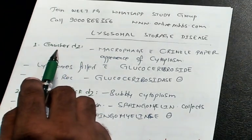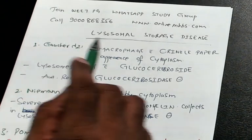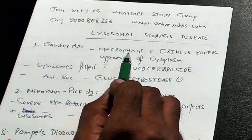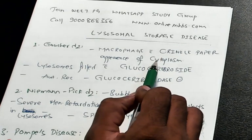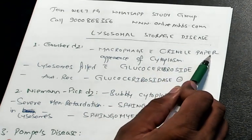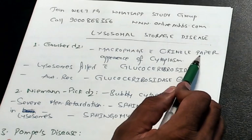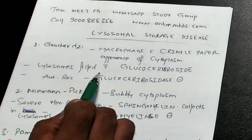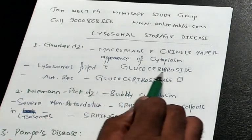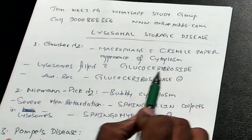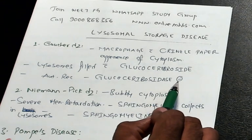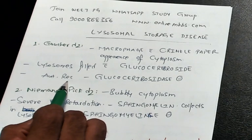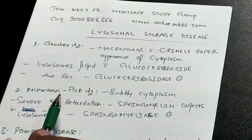Gaucher's disease — what are the 3 points you want to remember? In Gaucher's, the macrophage has got a cytoplasm with a crinkled paper appearance, which is what you should remember. The lysosomes are filled with glucocerebroside. Why? Because glucocerebrosidase is deficient. It is an autosomal recessive disorder.